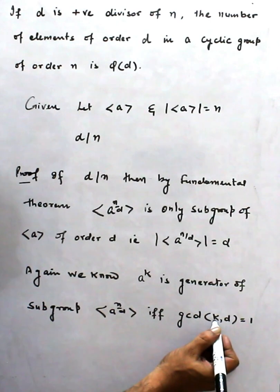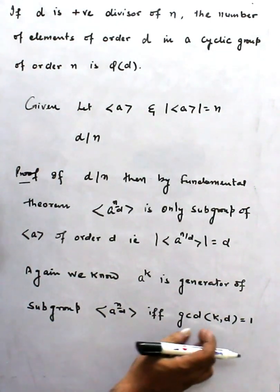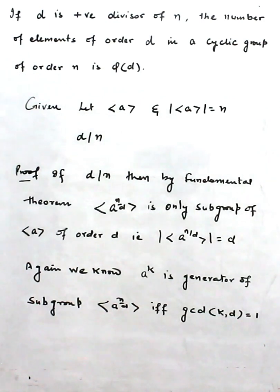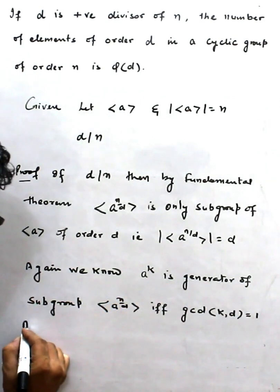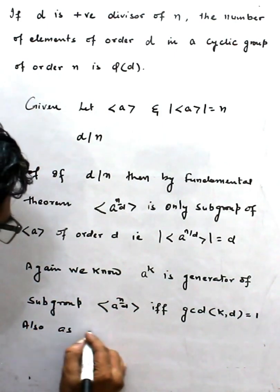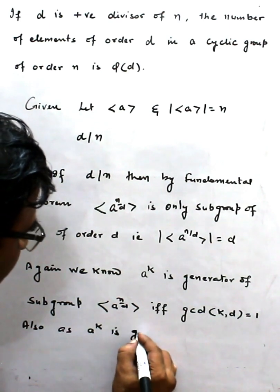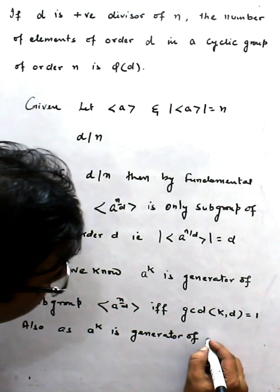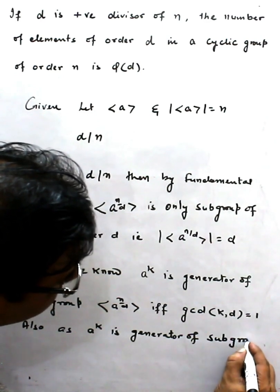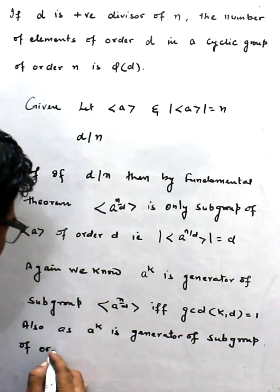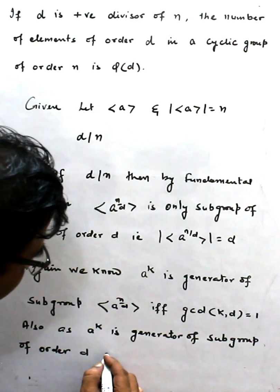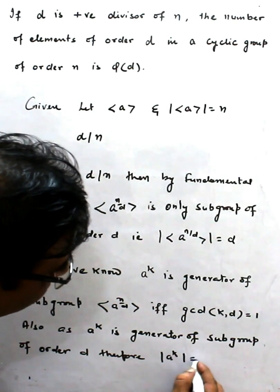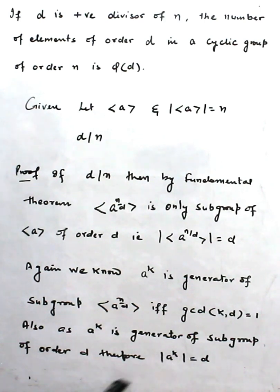So how many k's are there which are coprime to n? That means there are many k's which are coprime to d. As a^k is also a generator of subgroup of order d, therefore the order of a^k is also d.